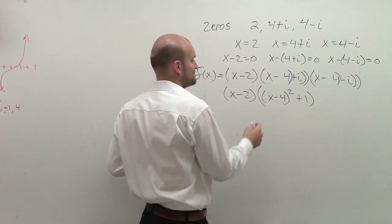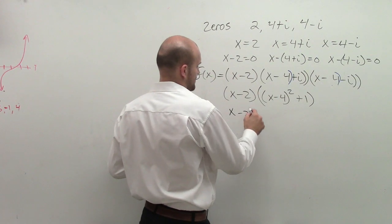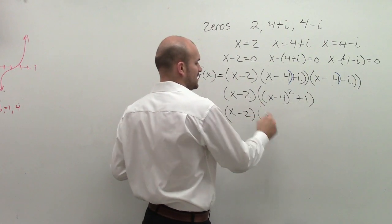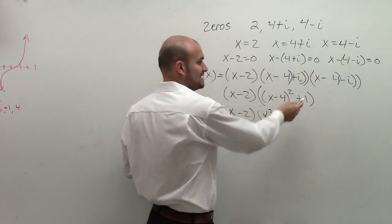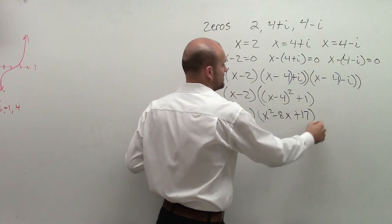So now I can do my x minus 4 squared. So that's going to be x squared minus 8x, and then I would usually do positive 16, but it's plus 1, so it's going to be positive 17.